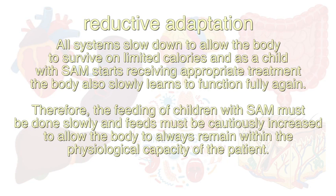As a child with severe acute malnutrition starts receiving appropriate treatment, the body also slowly learns to function fully again. Therefore, in children with severe acute malnutrition, feeding must be done slowly and feeds must be cautiously increased to allow the body to always remain within the physiological capacity of the patient.